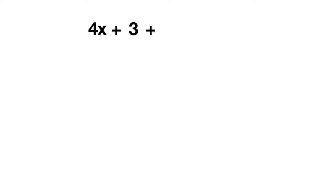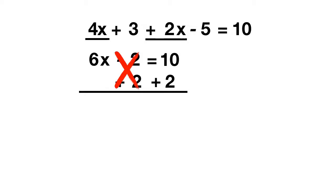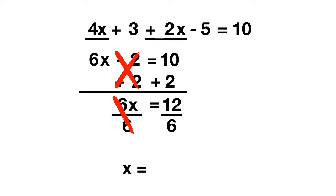Now it's time for you to try some on your own. The equation is 4x plus 3 plus 2x minus 5 equals 10. Start by combining terms with x: 4x plus 2x gives you 6x. Then combine plus 3 and minus 5 to get minus 2. This equals 10. Cancel the minus 2 by adding 2 to both sides, giving 6x equals 12. Divide by 6 — x equals 2.